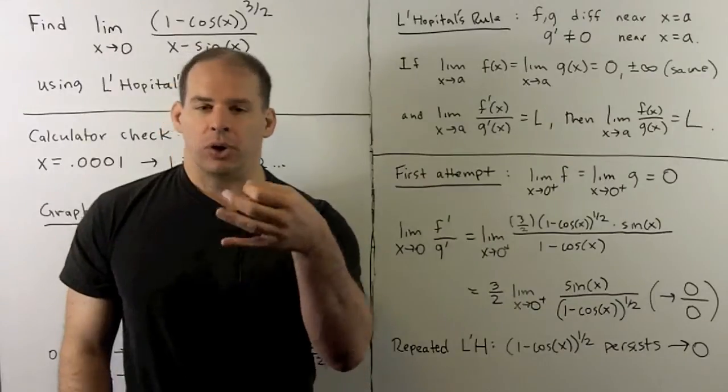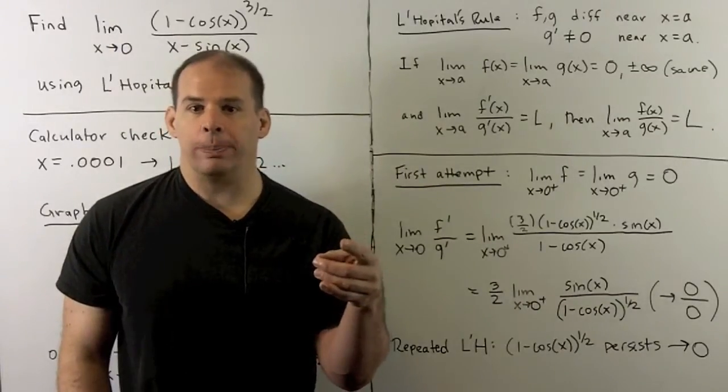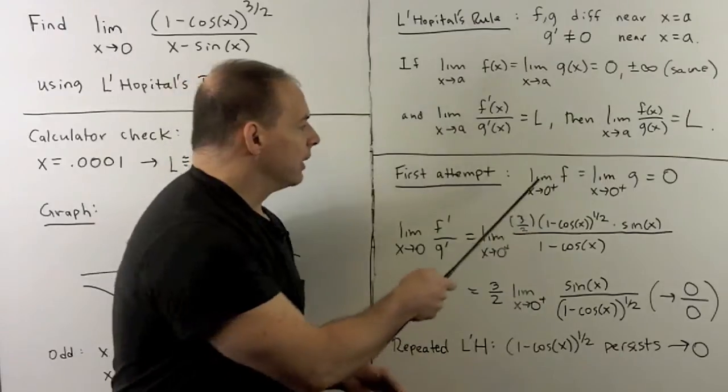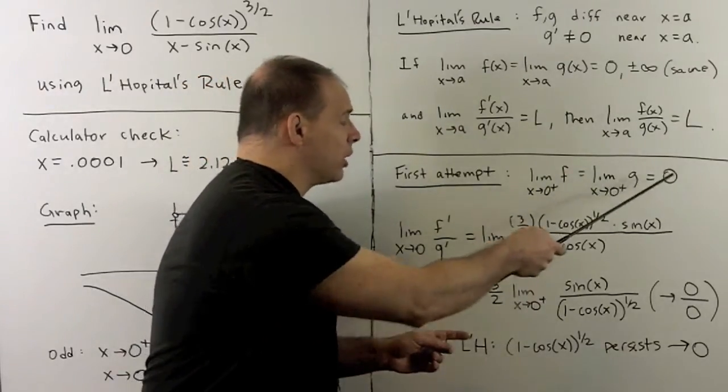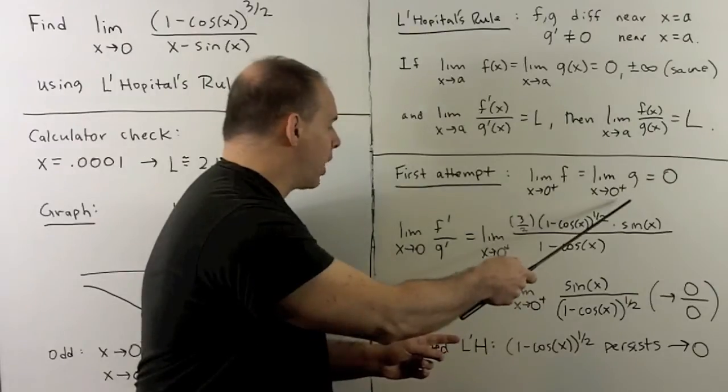So, if we're going to go with a straightforward approach using L'Hôpital's rule, what happens? Here we have our condition, numerator and denominator go to zero as zero comes in from the right.